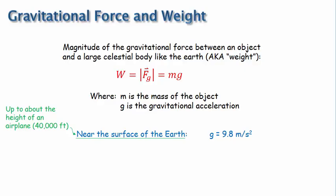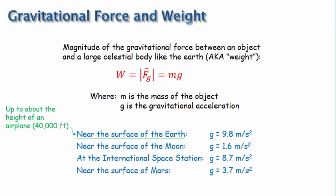Examples of some other values of g are near the surface of the Moon, g is 1.6 meters per second squared. At the location of the International Space Station, which is in low orbit around the Earth, g is equal to 8.7 meters per second squared. And near the surface of Mars, g is 3.7 meters per second squared. Those are just examples. The only one that students are expected to memorize is that the gravitational acceleration near the surface of the Earth is 9.8 meters per second squared.